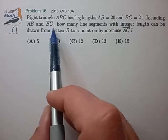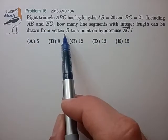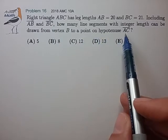Including AB and BC, how many line segments with integer length can be drawn from vertex B to a point on the hypotenuse AC?